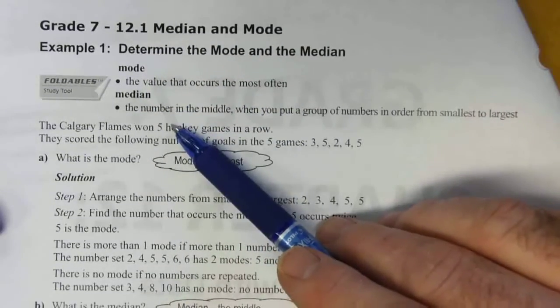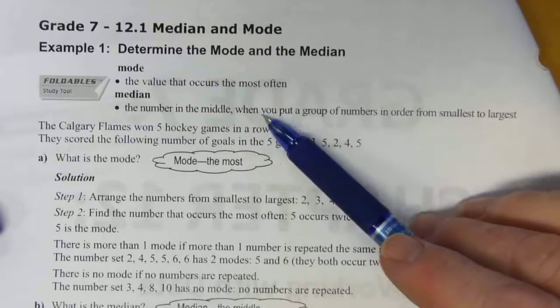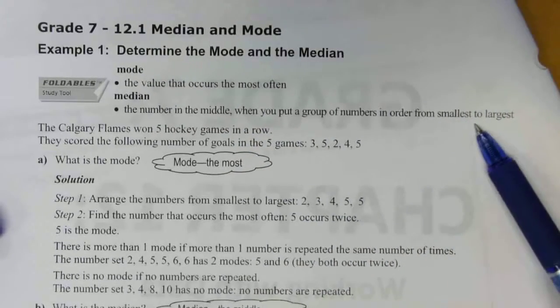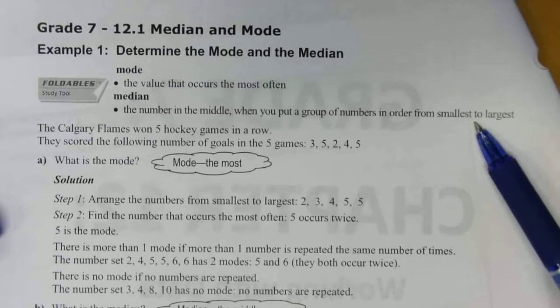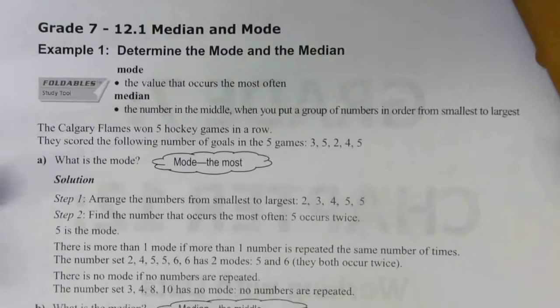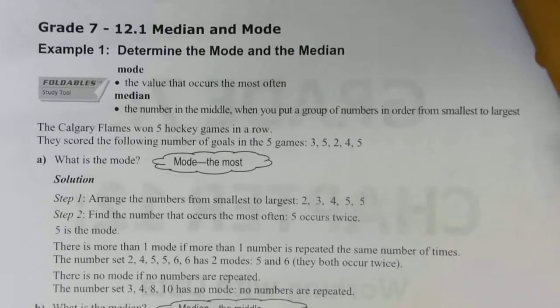The median is the number in the middle when you put a group of numbers in order from smallest to largest. So if you've got all the ages of everybody in this class and you list them in order from youngest to oldest, whatever the middle number is, that's going to be your median. If you've got five numbers, the third one in the list is the middle number.